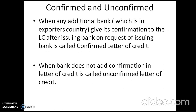The third type is confirmed and unconfirmed letter of credit. When a confirming bank gives confirmation to the letter of credit after the issuing bank's request — that is, an additional bank confirms the letter of credit — it is known as a confirmed letter of credit. When the confirming bank does not add its confirmation to the letter of credit, it is known as an unconfirmed letter of credit.